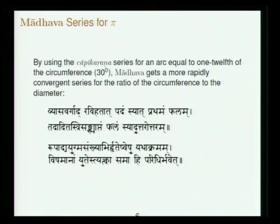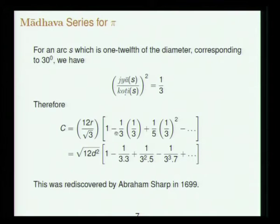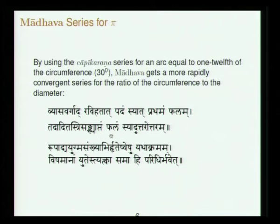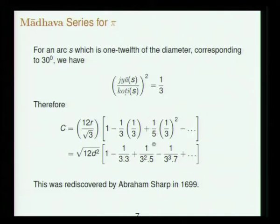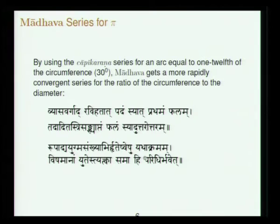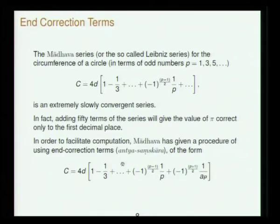The verse of Madhava: 'Vyasa Varghat Ravi Hatha' — Ravi is Dvada Shaditya, meaning 12 — 'Padamsyat Prathamam Phalam': the square of the diameter multiplied by 12, the square root of that is the first term. 'Tadhadhitaha Tvisankhyaptam Phalamsyat Uttarottaram': the further terms are successively divided by one-third. The odd terms etcetera also appear in the same way as before.